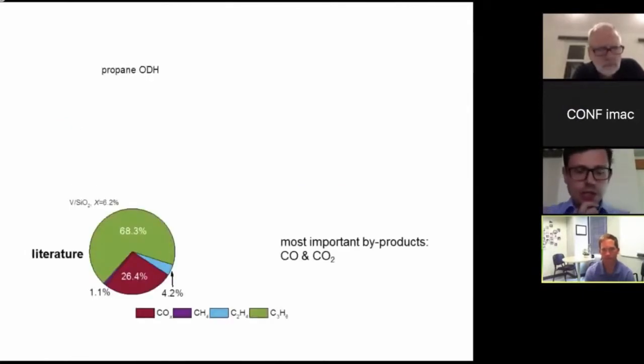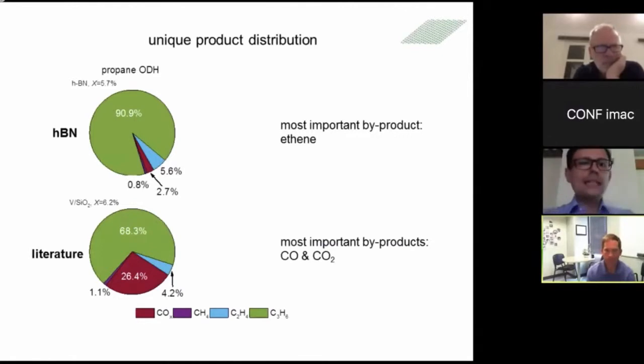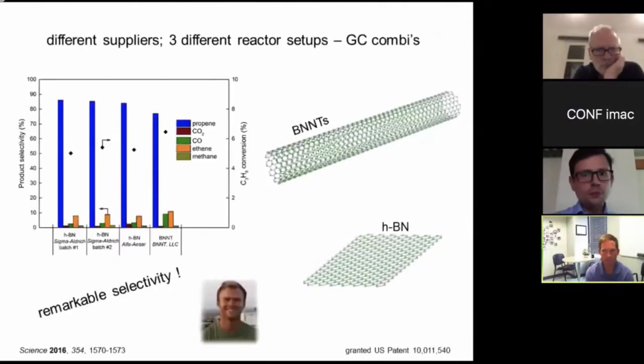So this is why we moved on and published these results in science. But then I want to draw your attention to this figure, which shows you the product selectivity obtained with a typical vanadium-based catalyst at 6% arbitrary conversion. X stands for conversion. As you can see, you get about 70% selectivity to propylene, with the most important byproducts being CO and CO2. About a quarter of your products is CO and CO2, not very desired. If you compare now this hexagonal boron nitride catalyst selectivity at the same conversion of 6%, just to always compare oxidations at either conversion levels, you get about 91% selectivity to propylene. But the most important byproduct here is not CO, CO2, but ethylene.